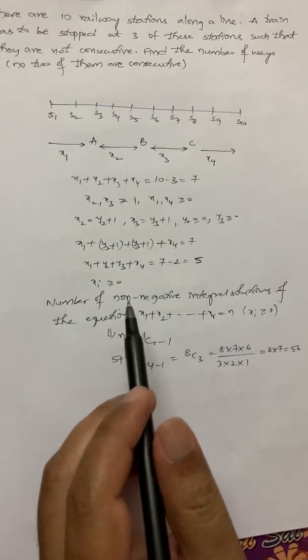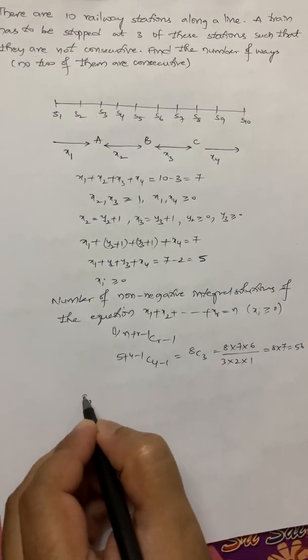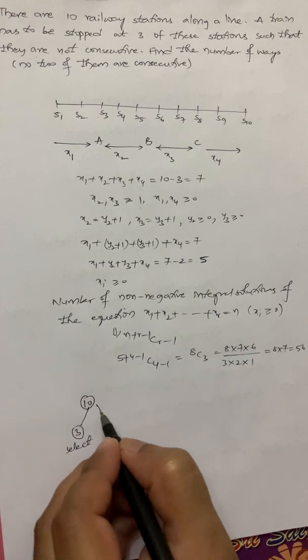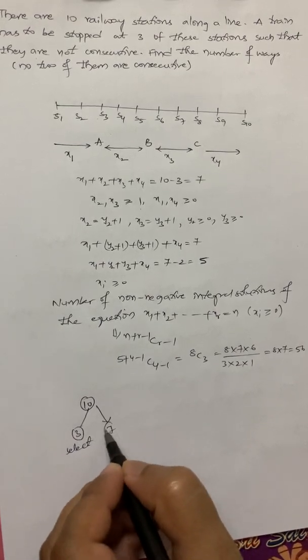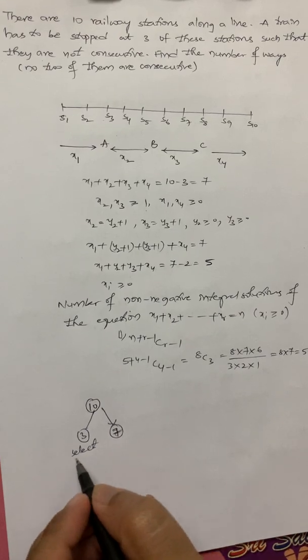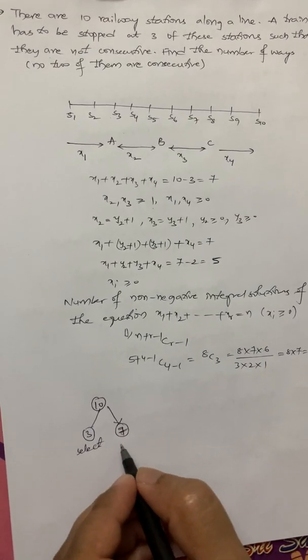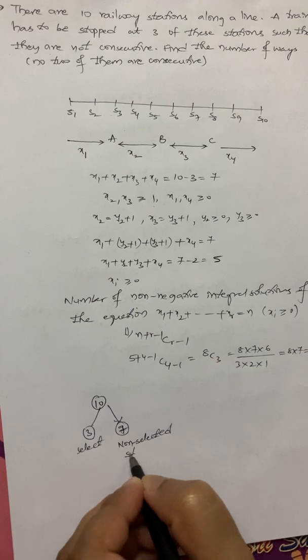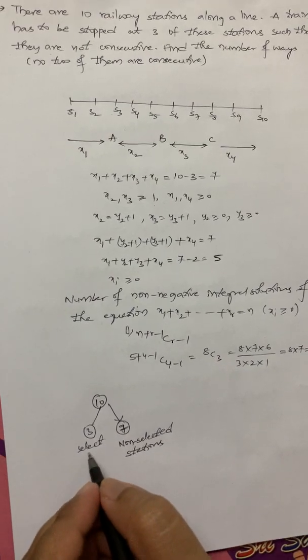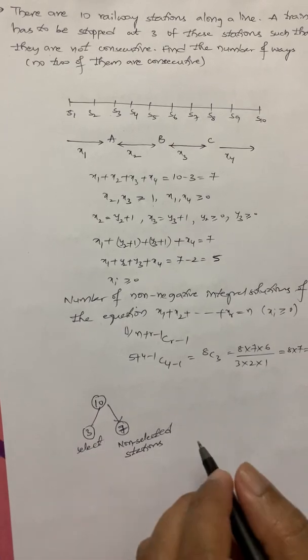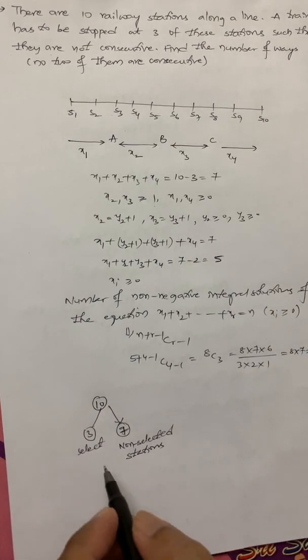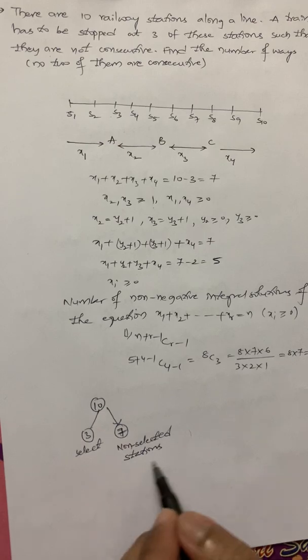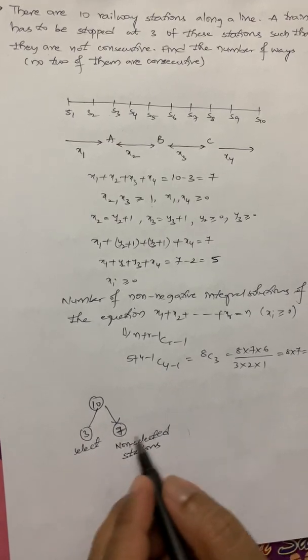Apart from the generating function, I will solve another method. What we have is 10 railway, 10 stations out of which 3 we have to select. These are useful, these are non-useful stations kind of thing. These are non-selective, I mean, non-selected stations. These are the 3 which we have to select. We need a gap of 1 between the selected stations. We will first arrange the non-selected stations. How many we have? 7. Those 7 will arrange first.